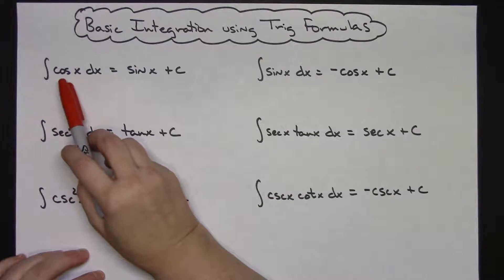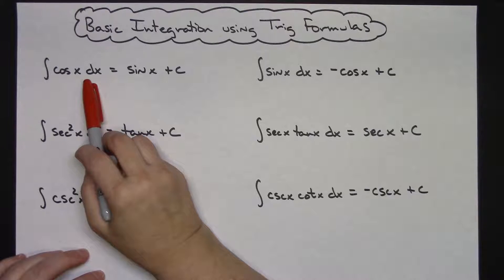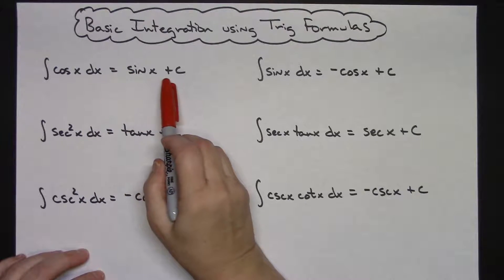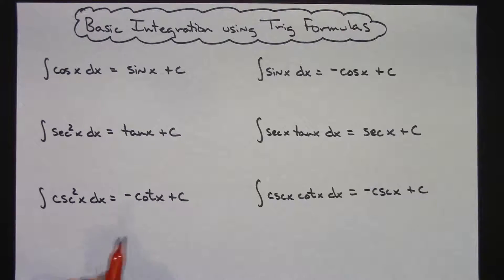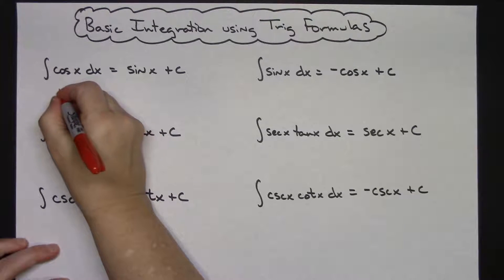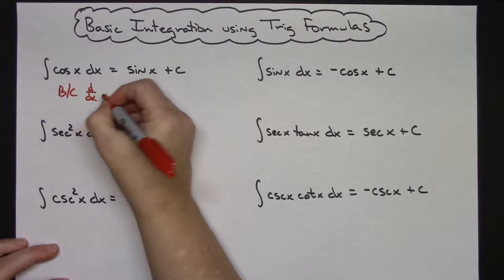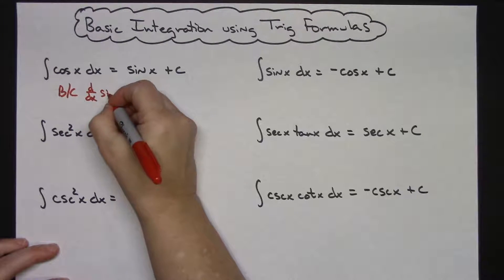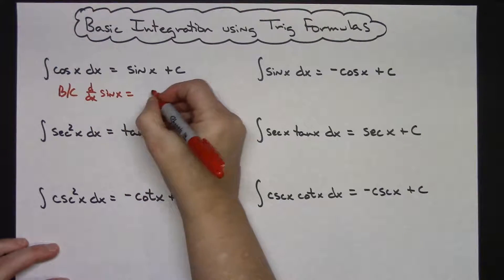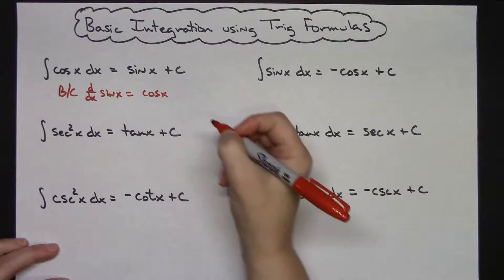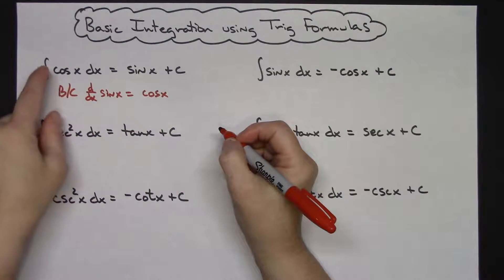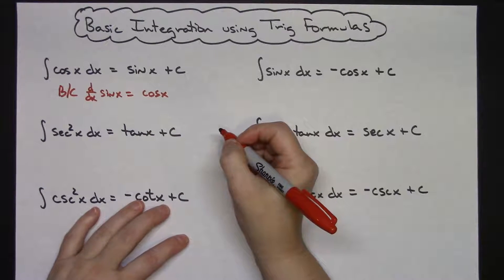When you integrate cosine of x dx, you get sine x plus c. This is because of what our derivatives are. When I do d/dx and take the derivative of sine x, well what do I get? I get cosine. So the integration is going to be just opposite of that.